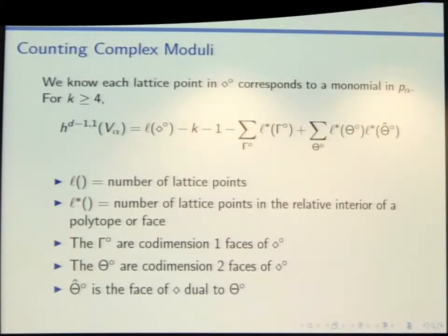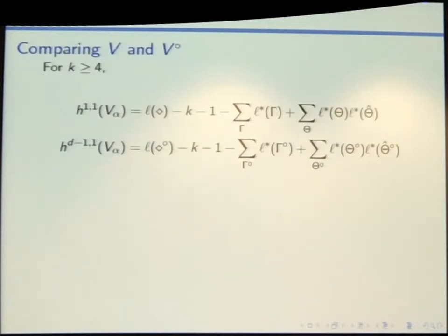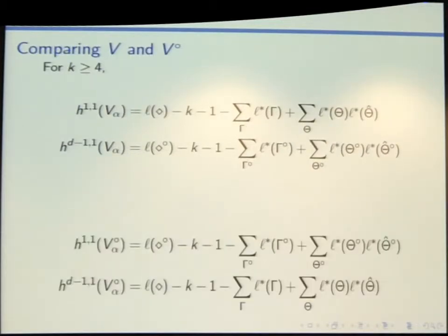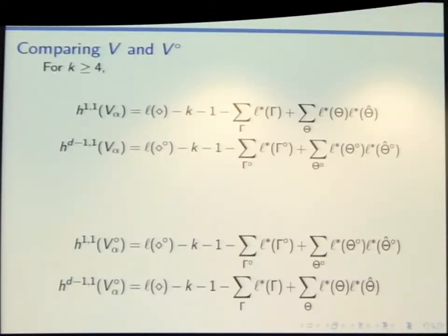You can also count the complex moduli of your hypersurfaces. It's easy to see that this should have something to do with lattice points in your polar polytope, because we defined our hypersurface using monomials — one monomial for every lattice point in the polar polytope. So the complex moduli count has at least something to do with that count, though maybe you get some isomorphism or overall dependence. Comparing the two formulas — for Kähler moduli and complex moduli — they look almost identical, just with the roles of the polytope and the polar polytope swapped.